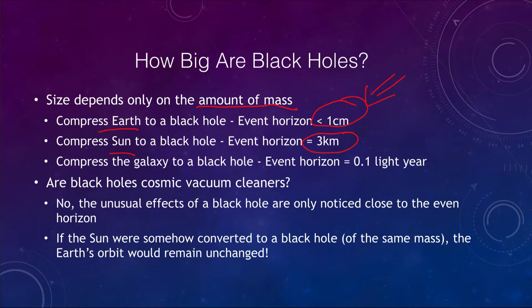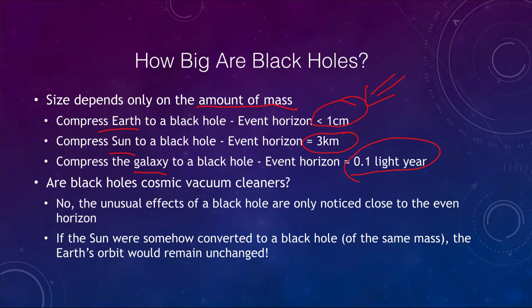If we want to make our galaxy into a black hole, we would have to compress it down to about one tenth of a light year. Remember that our galaxy is one hundred thousand light years across, so we have to compress that all down to something much much smaller than the distance to the nearest star — about four light years. This would be one tenth of a light year, essentially compressing a galaxy down to something not much bigger than a solar system.